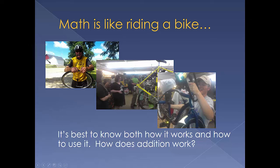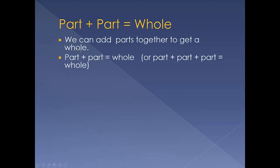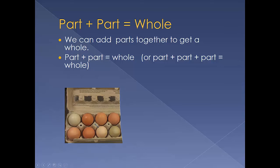How does addition work? Part plus part equals whole. We can add parts together to get a whole. So eight part of a dozen plus four the other part of a dozen add up to be twelve the whole dozen.